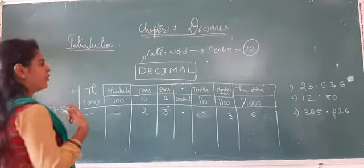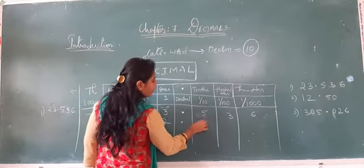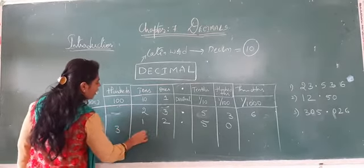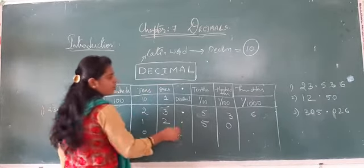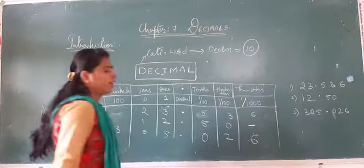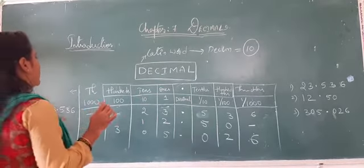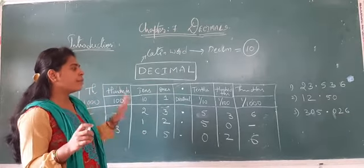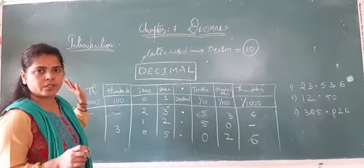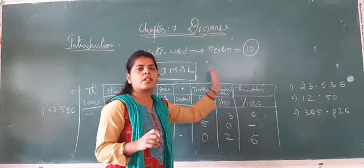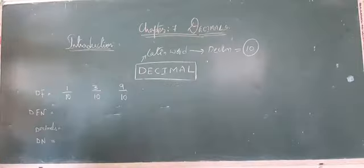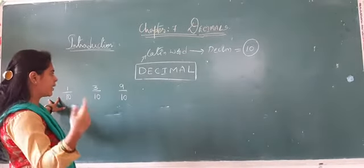The next example is 12.50. It is inserted into the table in the same way. Next example is 305.026 — inserted as 305 on the left and 0, 2, 6 on the right of the decimal point. Before the decimal point are ones, tens, hundreds places; after the decimal point are tenths, hundredths, thousandths places. You have to insert accordingly.